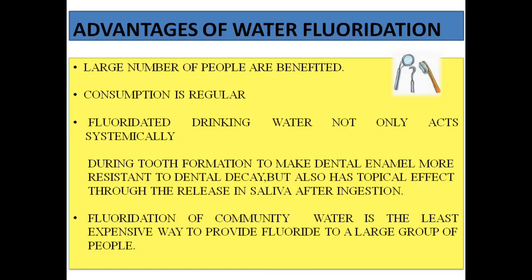The advantages of water fluoridation are that it can benefit a very large number of people because it is mixed in a community water supply, and an entire city can have caries reduced by 50 percent. It not only acts systemically but also has a topical effect through saliva, continuously replenishing lost minerals from the tooth. Fluoridation of community water is the least expensive way to provide fluoride to a large group of people.